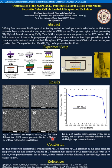The perovskite thin film is fabricated for 15 minutes, 25 minutes, 35 minutes, and 45 minutes. We can see that better perovskite crystals can be obtained at 35 minutes.